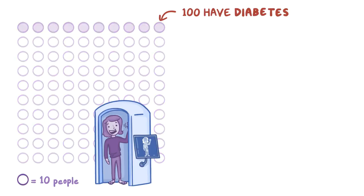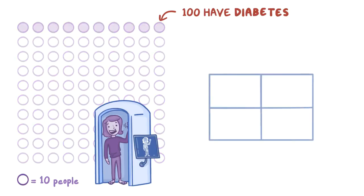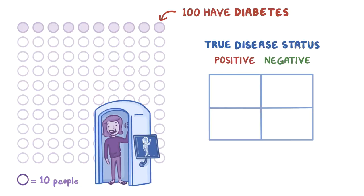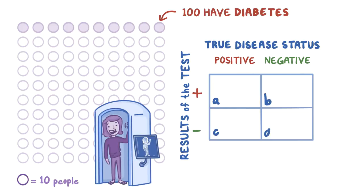We can organize the results by using a 2x2 table, where the true disease status — positive or negative — of the individuals is on top of the table, and the results of the screening test — positive or negative — are on the side. Each of the cells is labeled A, B, C, or D.